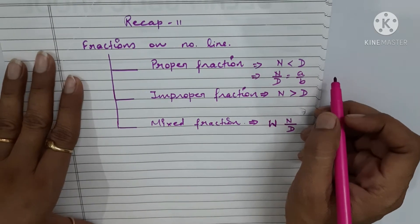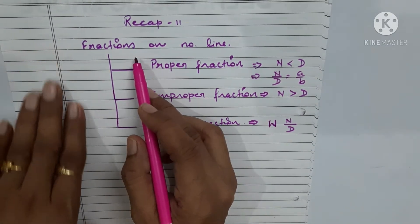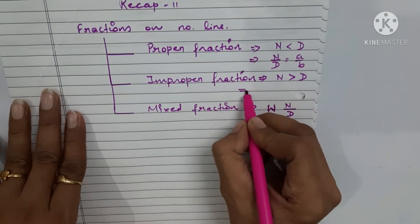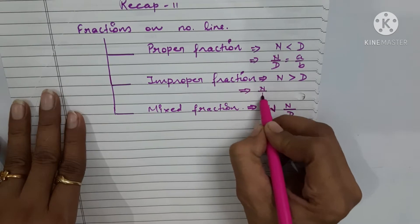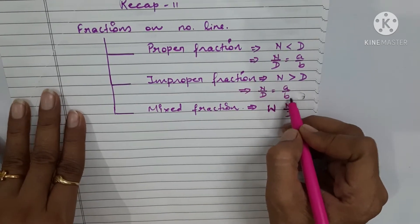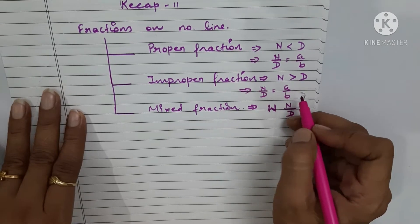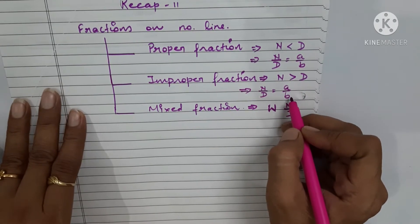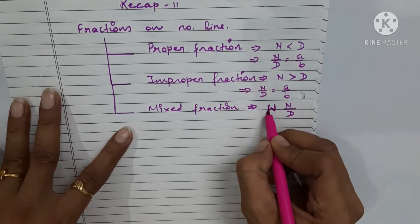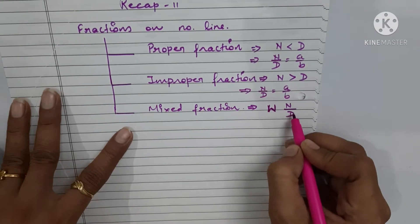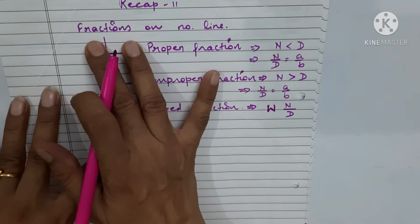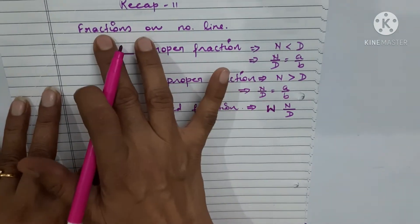An improper fraction can also be represented as a/b form where a and b belong to the whole numbers family but b is not equal to zero. In a mixed fraction, there is a whole number part and then a numerator upon denominator. These three — proper, improper, and mixed — are the types of fractions.